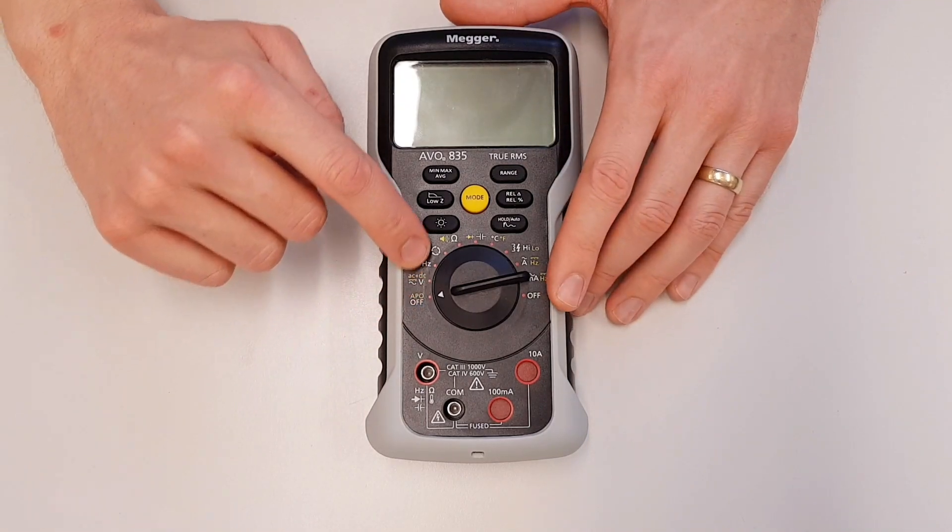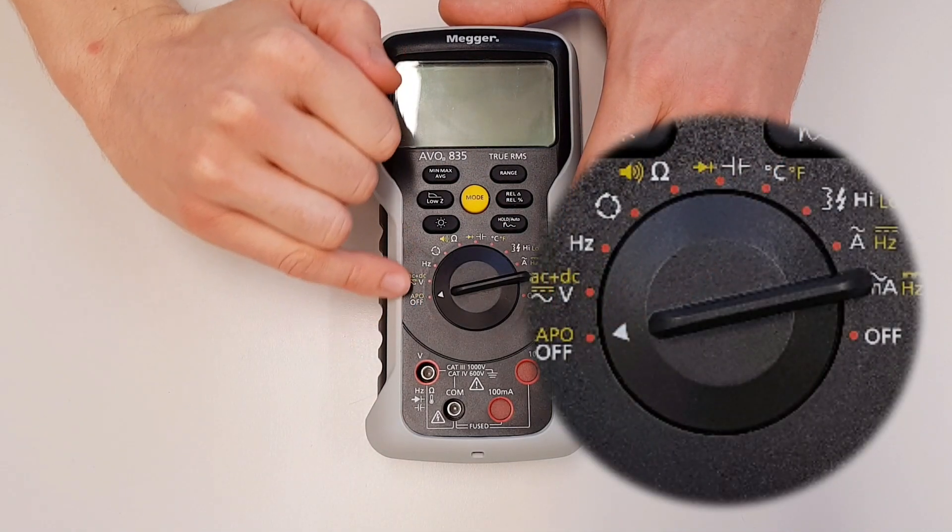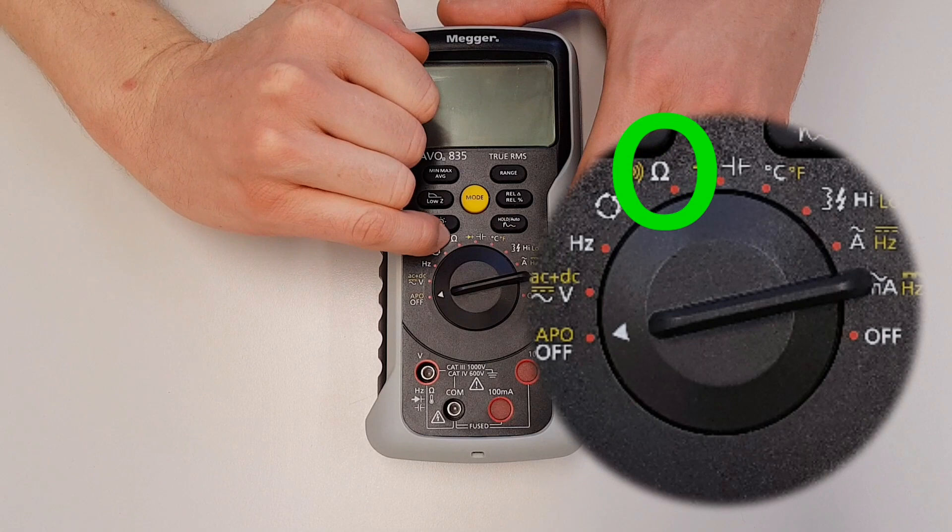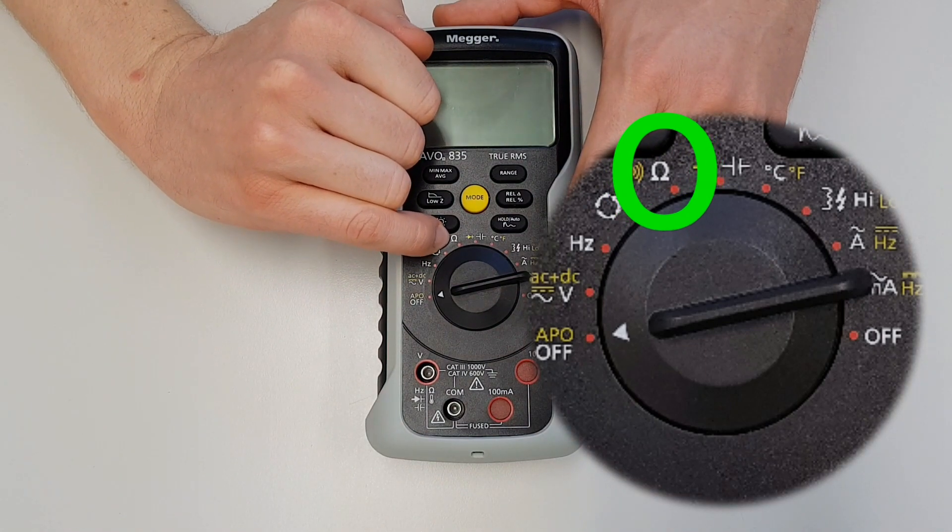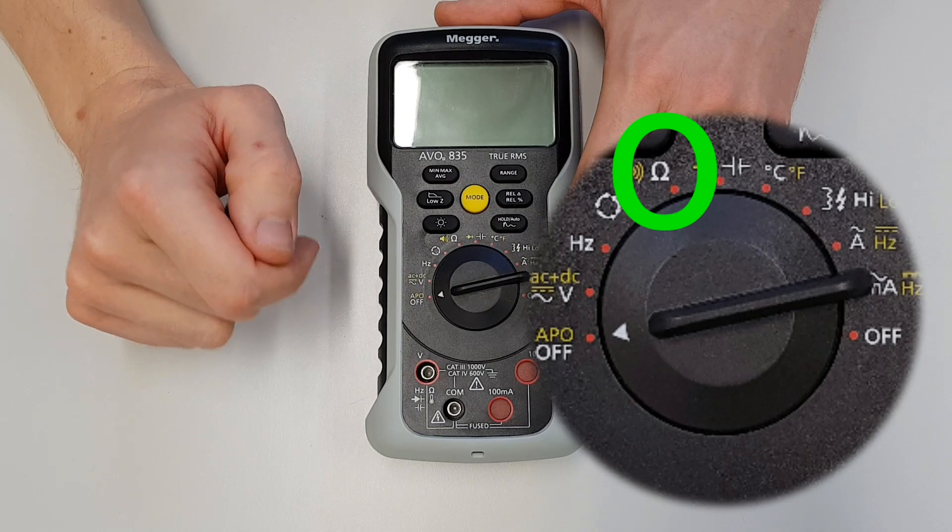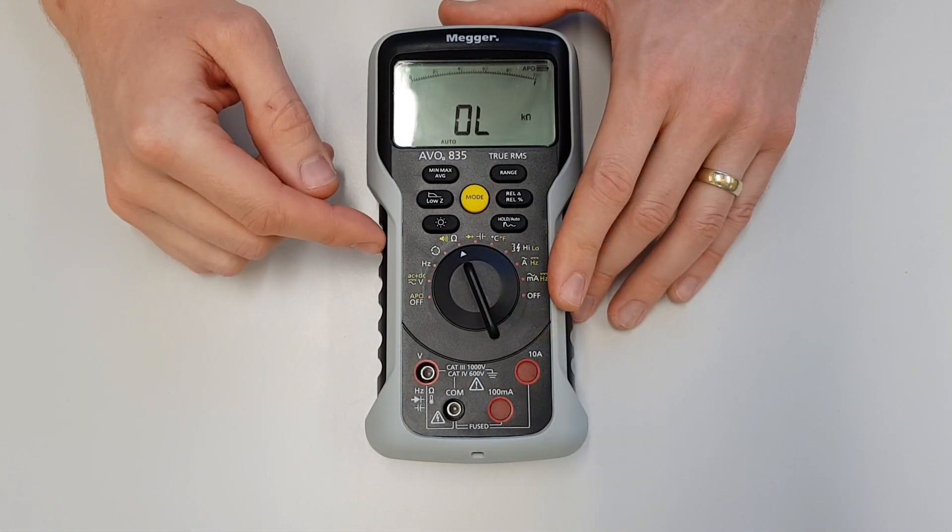First of all, we want to turn the dial to the correct setting. If we work our way around the dial here, we can see that when we get to this point we get the Omega symbol. From our studies in electrical science, we know that is the symbol we use to represent resistance. So we'll dial that round to that symbol.